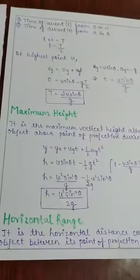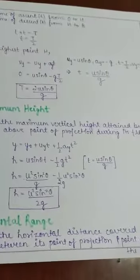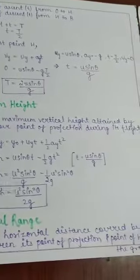Horizontal range. Horizontal range is the horizontal distance covered by the object between its point of projection and the point of hitting the ground.